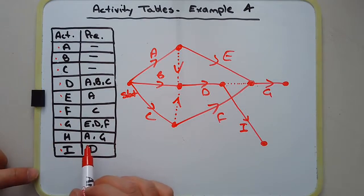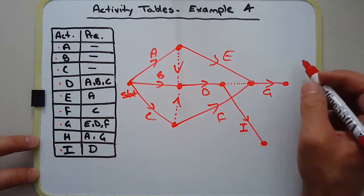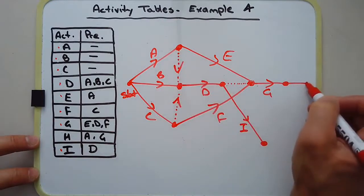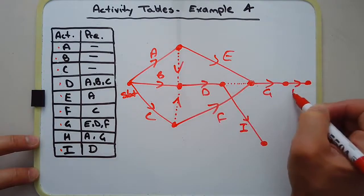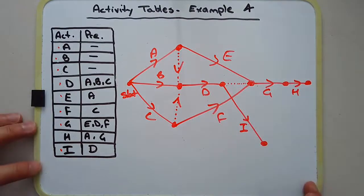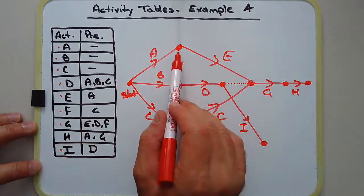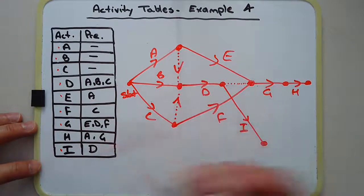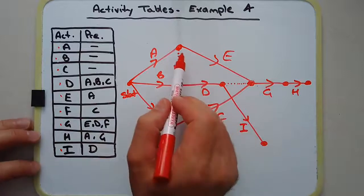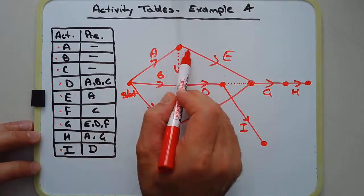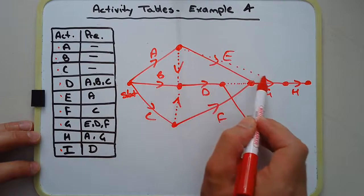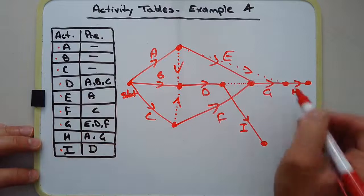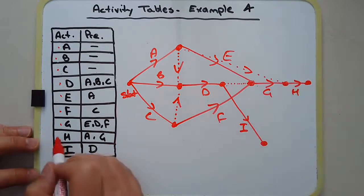Activity H depends on A and G. There's activity A here, and there's activity H. But activity H also depends on A, so the way I'm going to show that is, again, through a dummy activity.